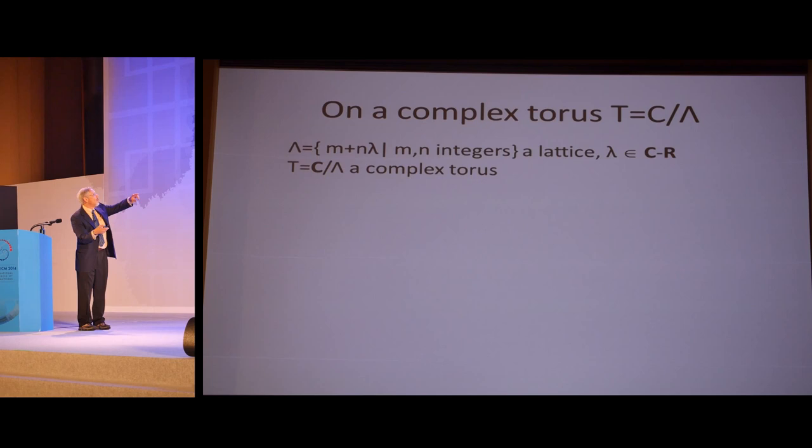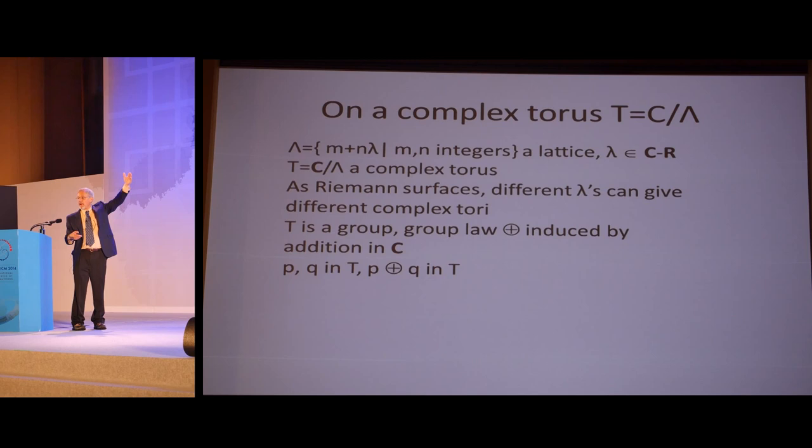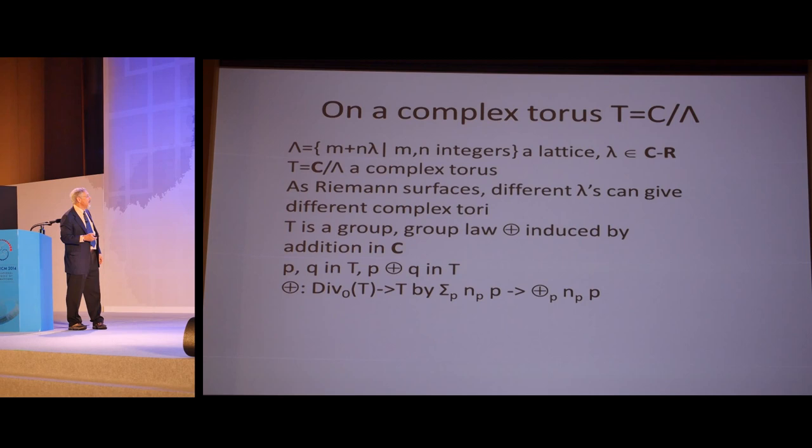If you have a complex torus, this is C modulo a lattice, like the set of all m plus n lambda where m and n are integers and lambda is not real. Then you get a complex torus. It looks like a surface of genus one. In Professor Bhargava's talk, to him these are given by an equation like y² = x³ + ax + b. A and b are transcendental functions of lambda. We've moved up to a different level where certain things are harder and certain things are easier. I emphasize that as lambda changes, these are not the same as complex manifolds. Also, T is obviously a group. If you have P and Q in T, I'm going to denote with this circular plus sign their sum in T.